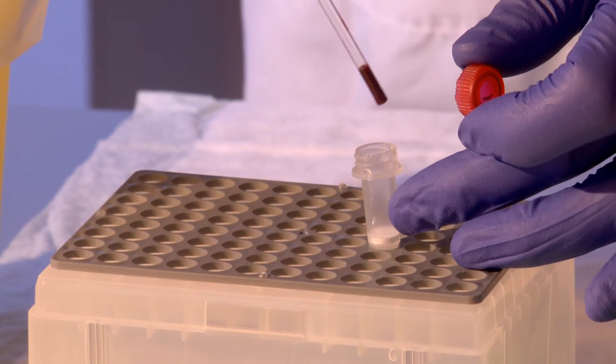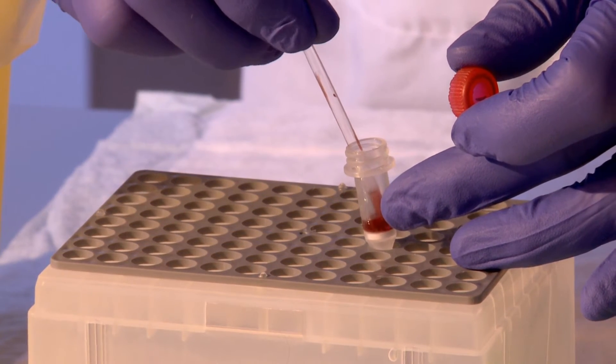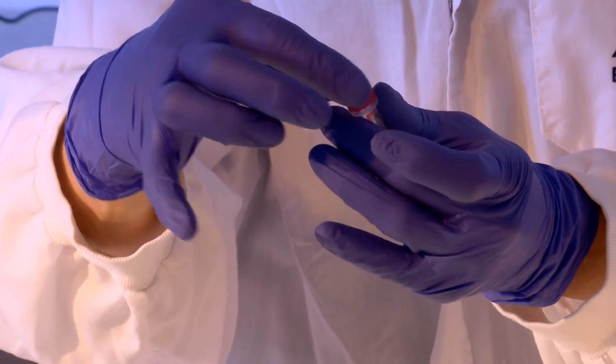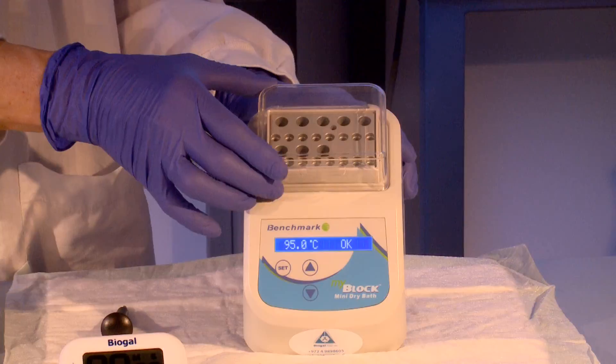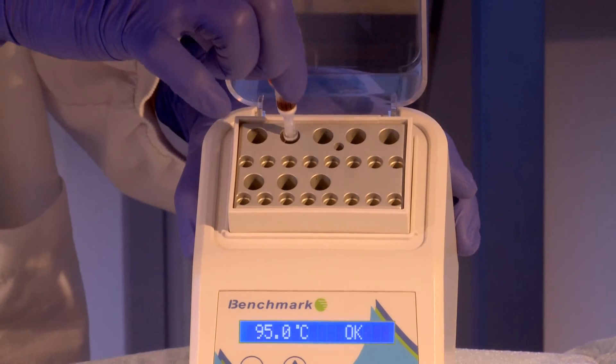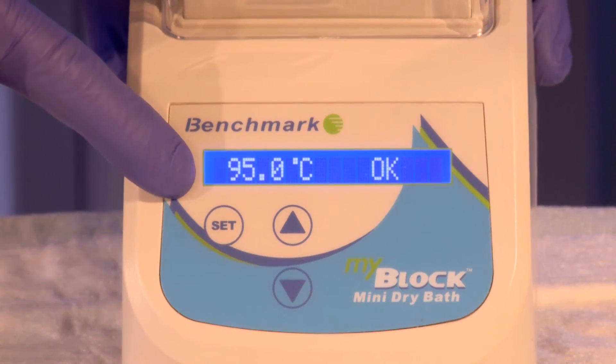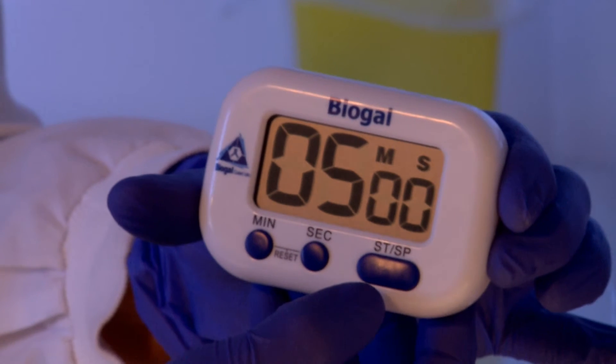Add this blood to the extraction buffer found in the column. Close the column lid firmly and mix by tapping lightly on the side of the column. Place the column into a hole of the preheated block and allow it to incubate at 95 degrees centigrade for exactly 5 minutes.